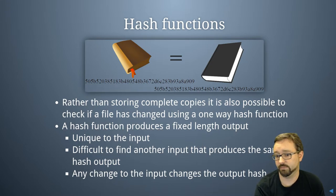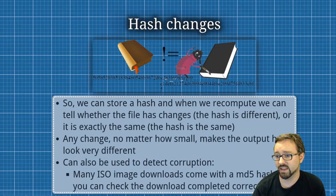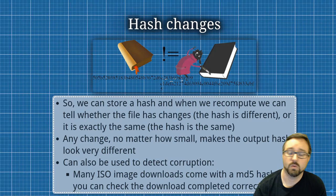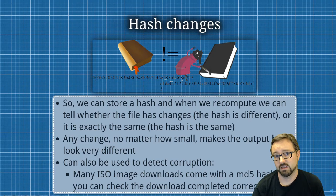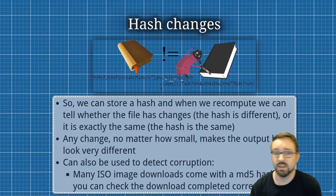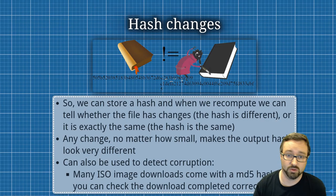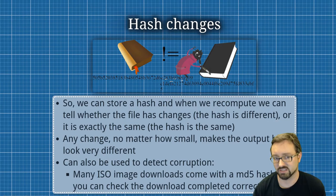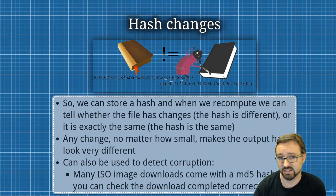So what we can do is store the hash and then when we want to see whether anything's changed, we recalculate the hash based on what's in the file now and compare that to the hash we stored last time. If they're the same then nothing's changed; if they're different you know the files are different. The hash won't tell you exactly how it's different, but it will detect any changes at all.